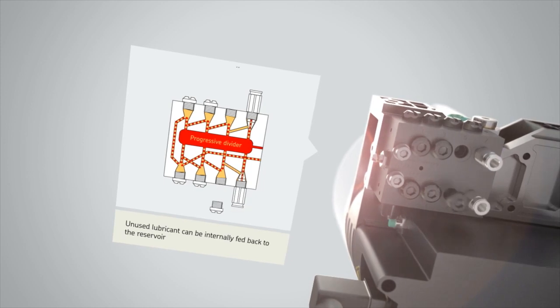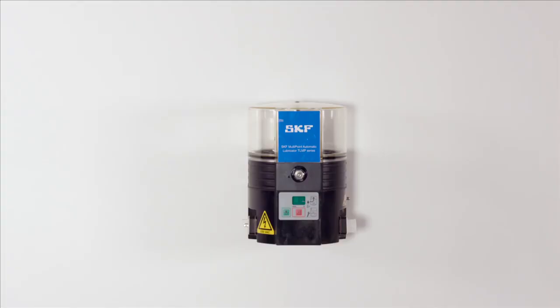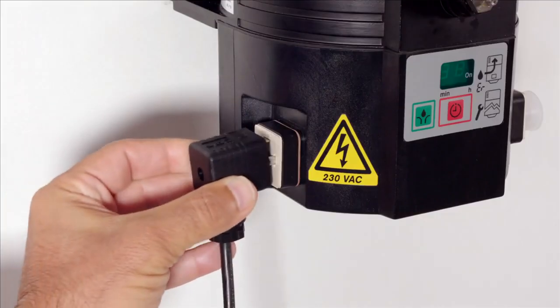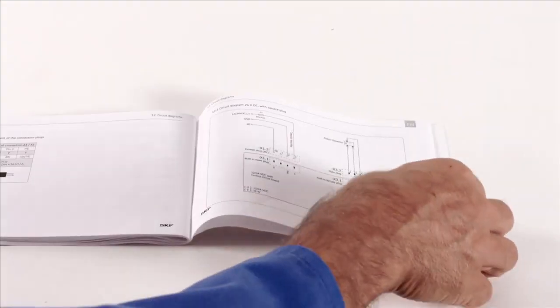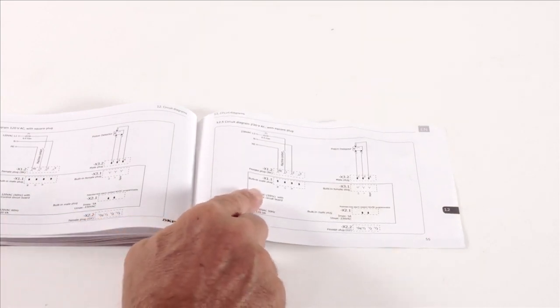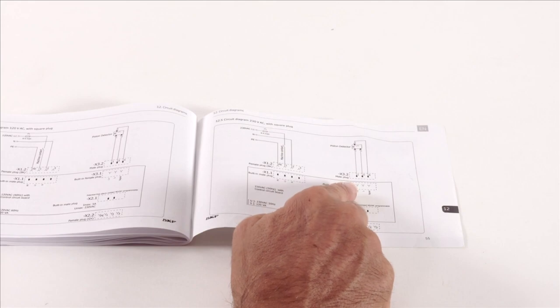Depending on your configuration you can use some or all of the outlets. With the pump unit mounted on a firm surface, connect the pump to the correct power supply. The electrical installation should be done by a qualified electrician and must comply with the specifications provided in the TLMP instructions for use.